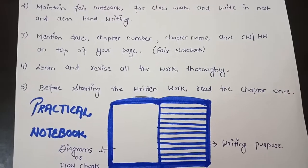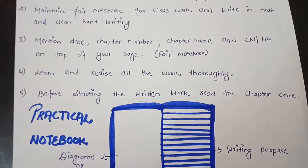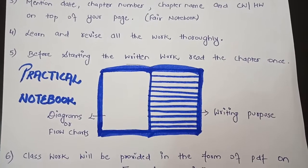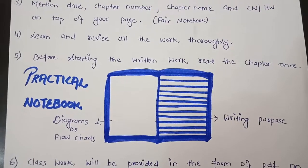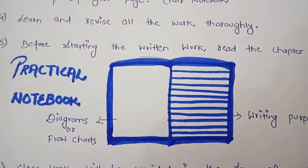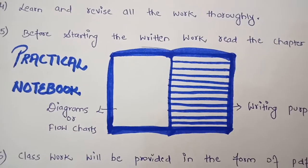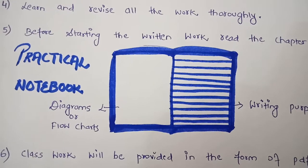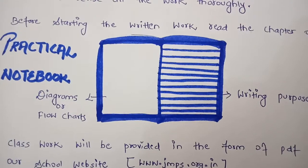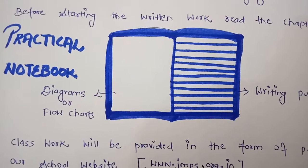Point number four: learn and revise all the work thoroughly. Point number five: before starting written work, read the chapter once for better understanding. Everyone was asking about the science notebook, so here's my answer: we need a practical notebook for science, and as you can see, the left side has a plain page and the right side is ruled. The plain side is for diagrams or flowcharts, and the ruled side is for writing.